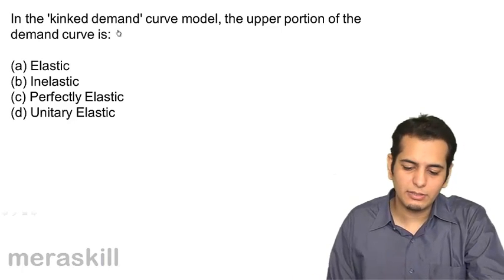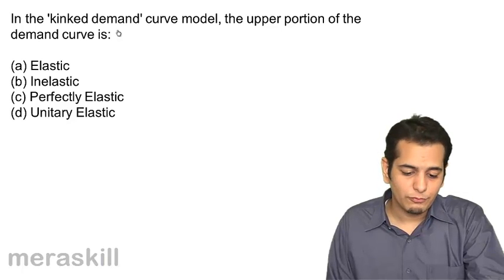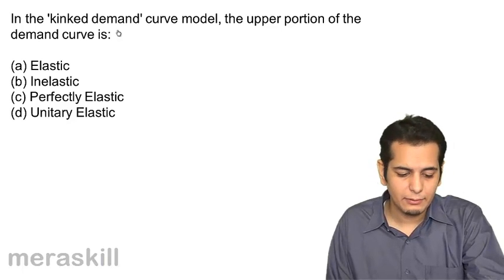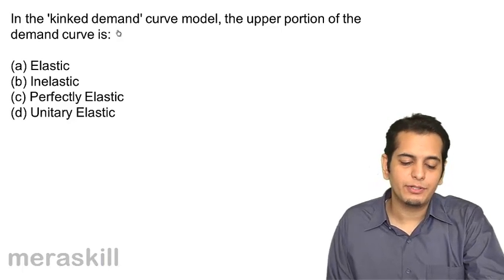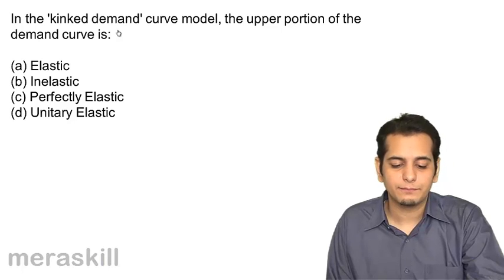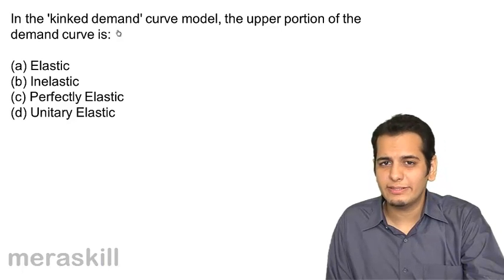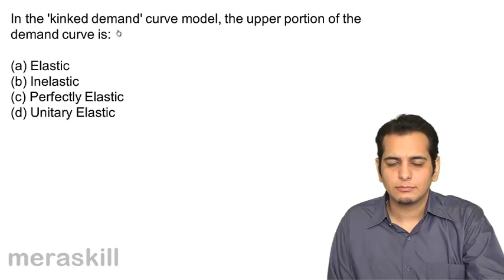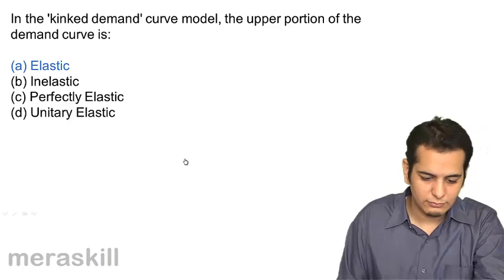In the Kinked Demand Curve model, the upper portion of the demand curve is: A. Elastic, B. Inelastic, C. Perfectly elastic, D. Unitary elastic. How is the upper portion — elastic or inelastic? The upper portion is elastic.